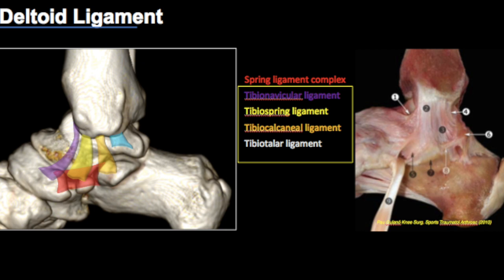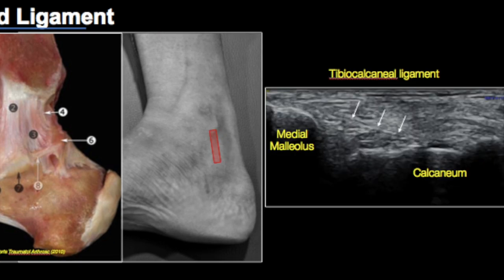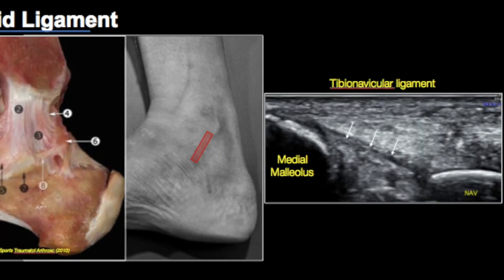We put the proximal end of the probe over the medial malleolus and swing the probe from posterior to anterior, using the medial malleolus as a fulcrum — the movement of the probe is like that of a fan. Posteriorly we see the tibiotalar ligament, then the tibiocalcaneal ligament, the tibiospring component, and anteriorly the tibionavicular ligament.